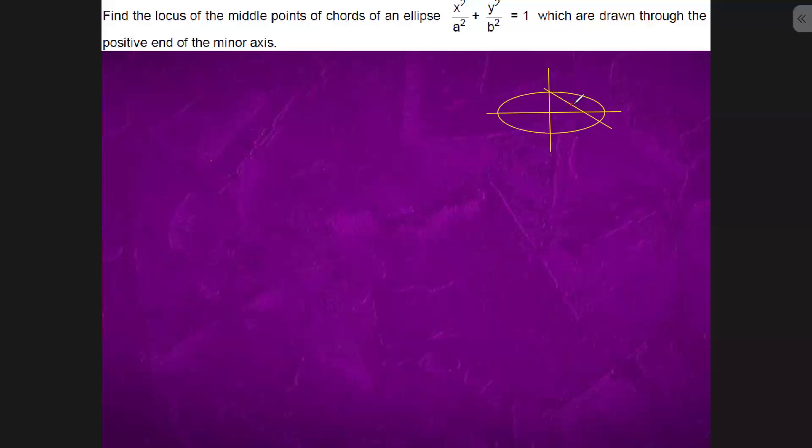We will take this as h, k and this is 0, b. This point we will take as parametric form a sin theta, b cos theta.